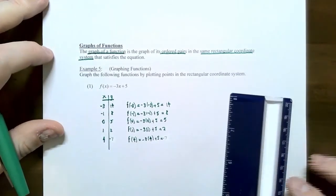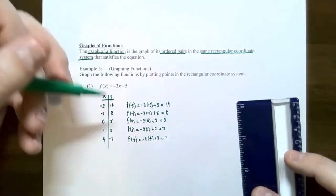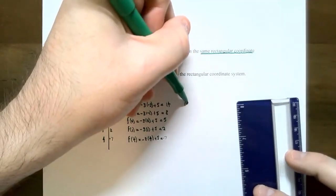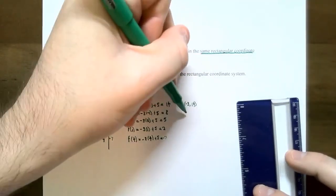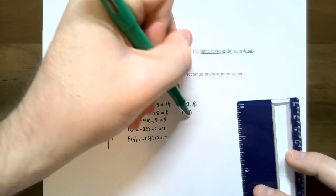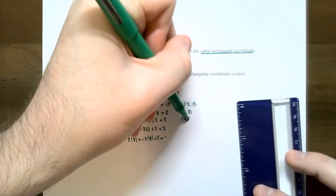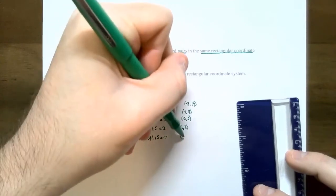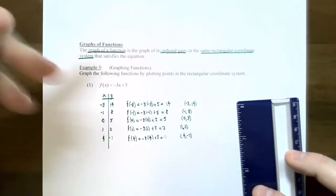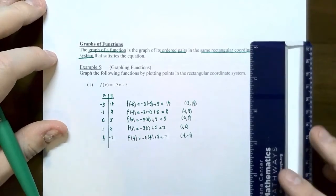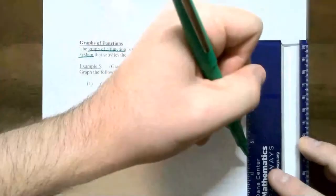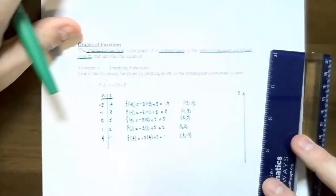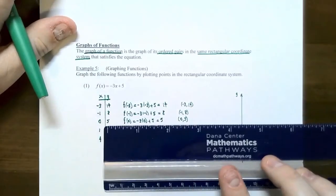The function evaluation gives us ordered pairs. One ordered pair would be negative three, 14. We can plot that point, along with negative one comma eight, zero comma five, one comma two, and four comma negative seven. Let's see what happens with the graph if we plot these five points. We have the vertical y-axis and the horizontal x-axis.